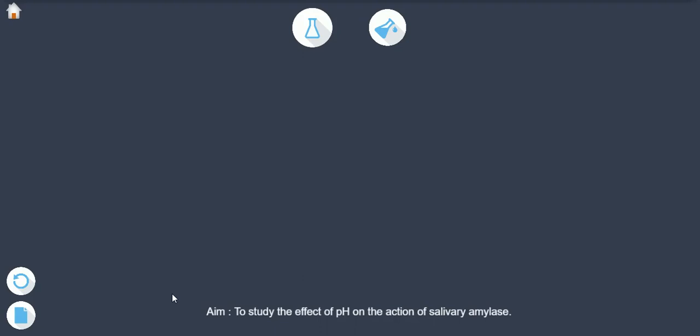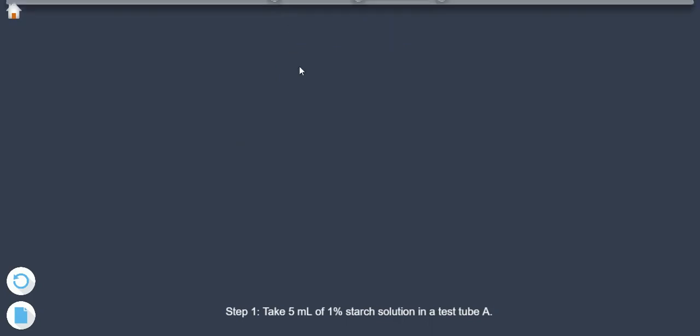Study the effect of pH on the action of salivary amylase. Step 1: Take 5 ml of 1% starch solution in a test tube A.